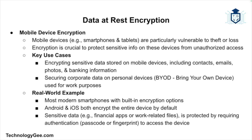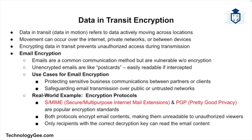Data in transit, also called data in motion, refers to data actively moving from one location to another — whether across the internet, a private network, or between devices. Encrypting data in transit ensures no one can intercept and read it while being transmitted. Email encryption is one key type: sending emails without encryption is like sending a postcard — anyone who intercepts it can read its contents. Protocols like S/MIME and PGP (Pretty Good Privacy) encrypt email contents, making them unreadable to unauthorized parties.